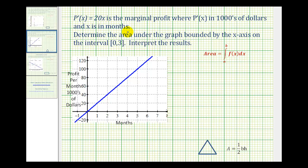P prime of x equals 20x is a marginal profit function where P prime of x is in thousands of dollars and x is in months. We want to determine the area under the graph bounded by the x-axis on the closed interval from zero to three, and then interpret the results.